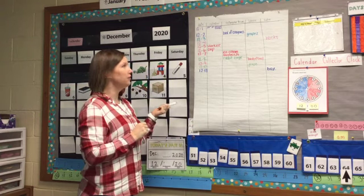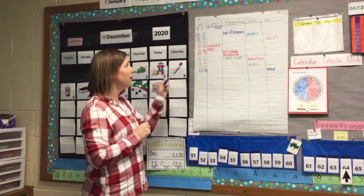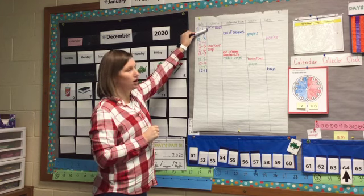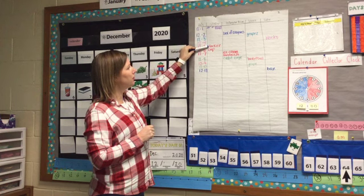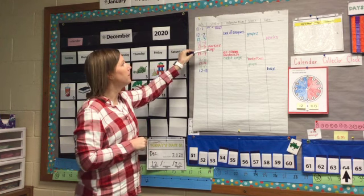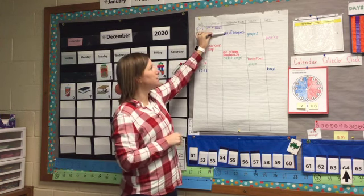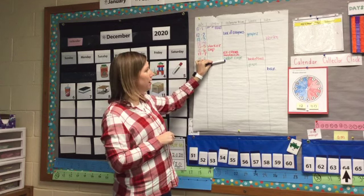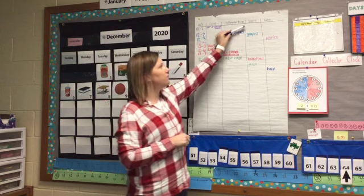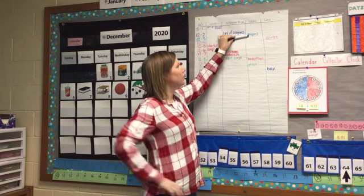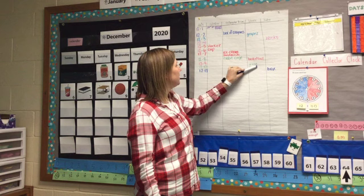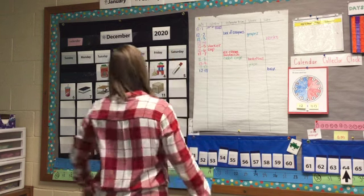Looking at our chart so far: we have a cylinder — jar of peanut butter, a marker, and a cup. Our rectangular prisms: box of crayons, ice cream sandwich, and a rabbit cage. Sphere: grapes, a basketball, and another grape. We have two grapes.